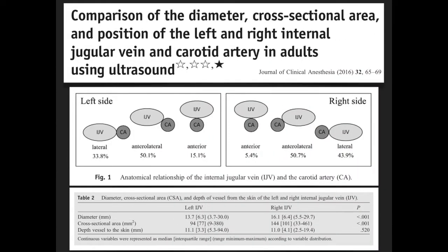In a prospective non-randomized cohort study, it was found that the right internal jugular vein was much larger in diameter and in most instances was laterally placed to the corresponding carotid artery, making it the preferred site for cannulation.